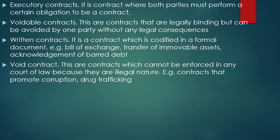A written contract is a contract confined in a formal document, such as a bill of sale, transfer of movable assets, transfer of cars, or acknowledgment of bad debts. Void contracts are contracts which cannot be enforced in any court of law because they are illegal in nature — such as contracts that promote corruption or drug trafficking. They cannot be enforced in any court of justice.